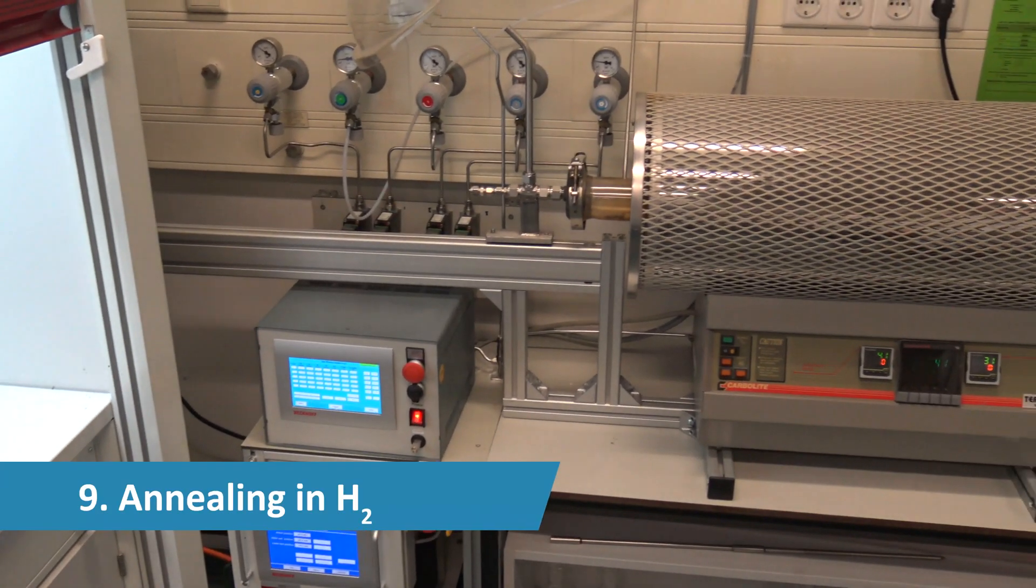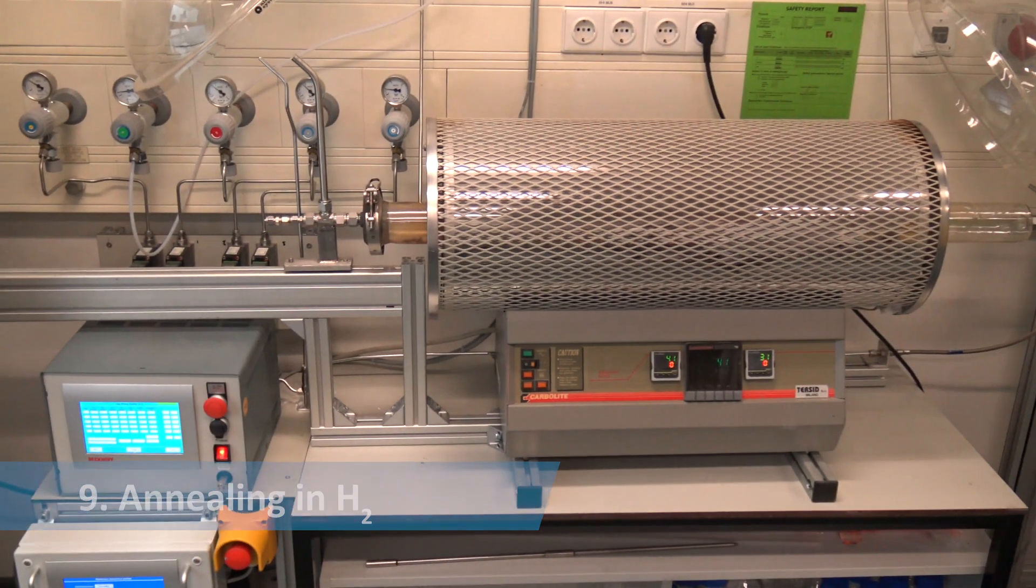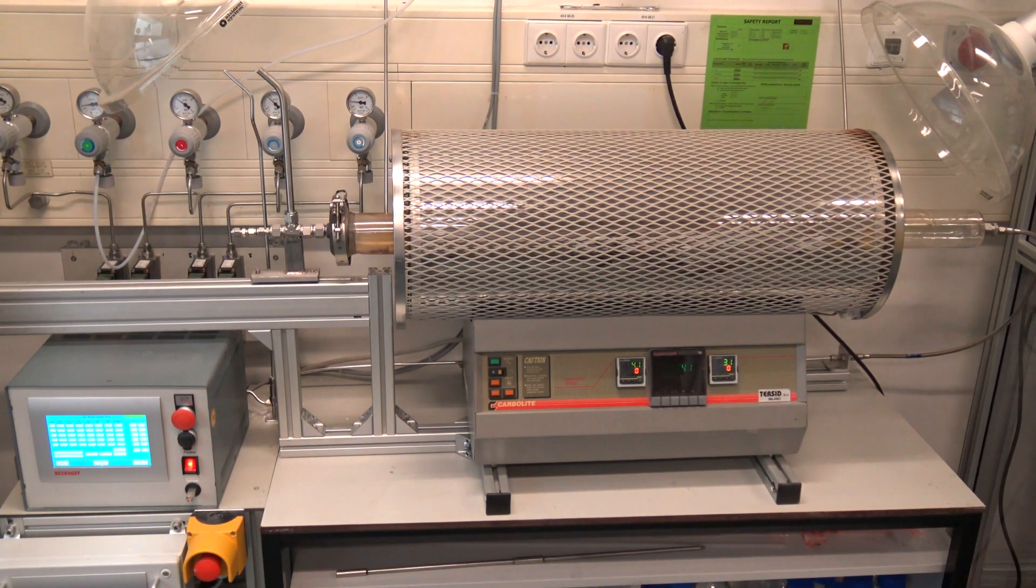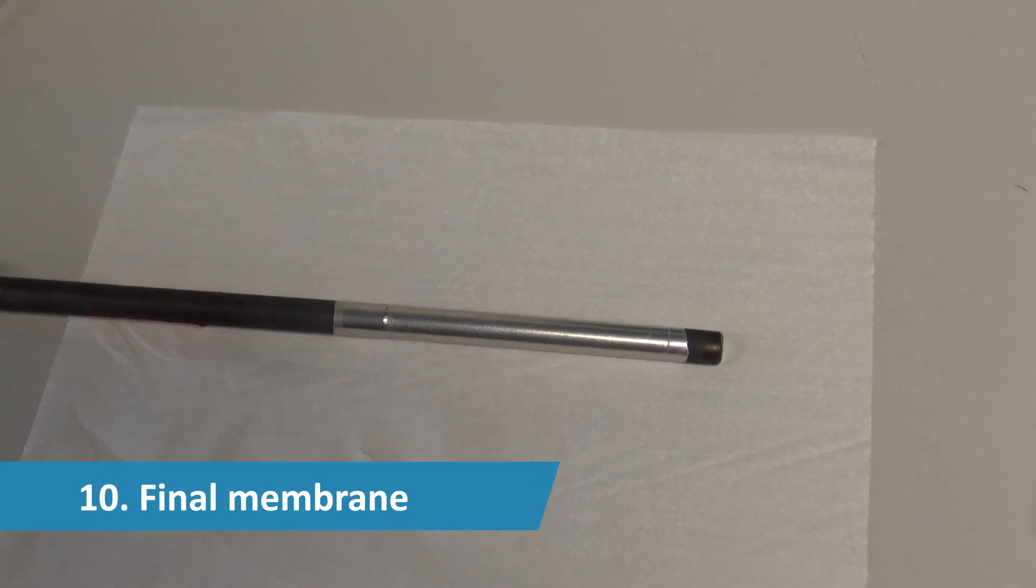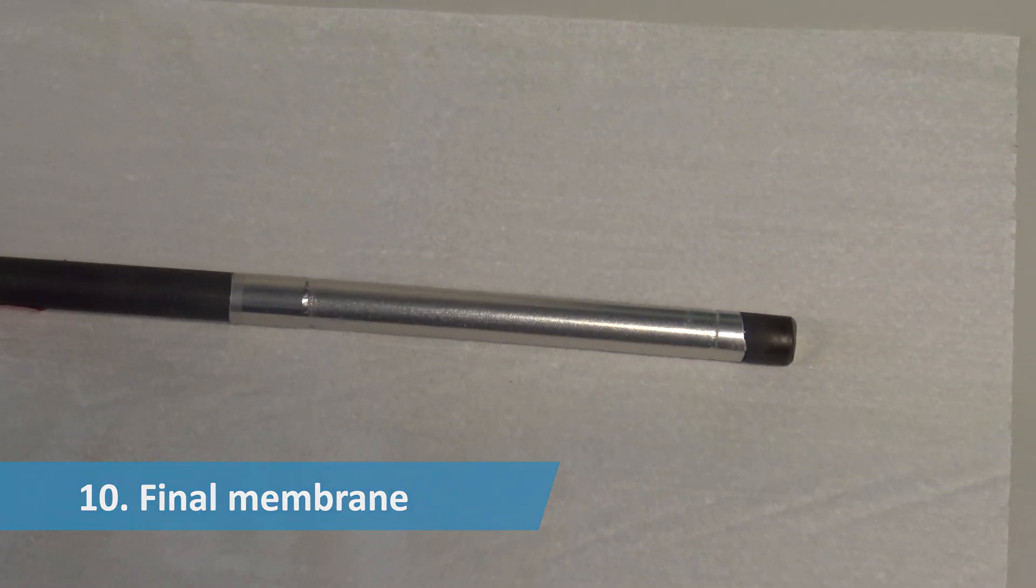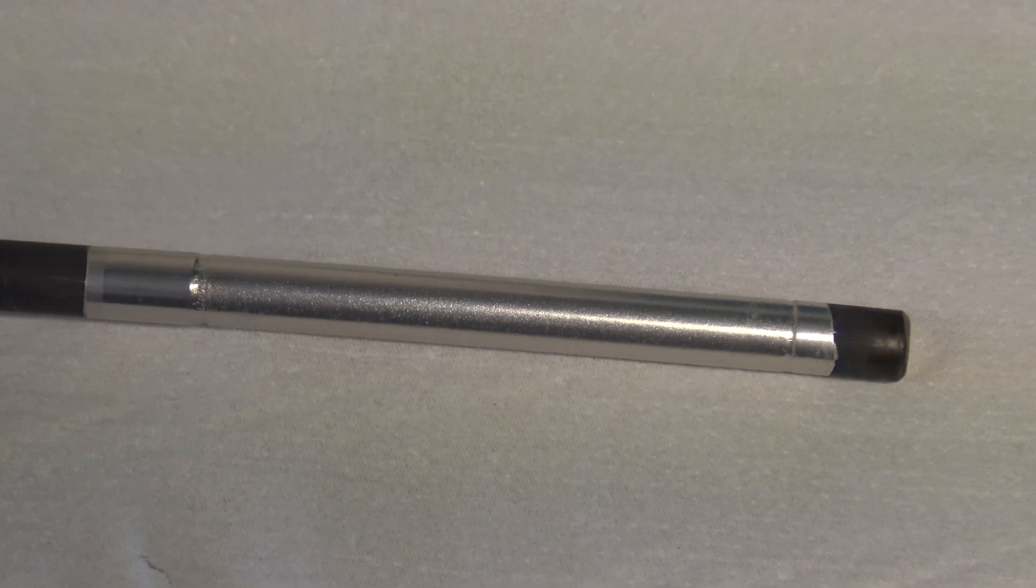Lastly, the membrane is annealed in a hydrogen atmosphere. The final result is a stable palladium silver membrane ready to use in novel reactors or gas separation units.